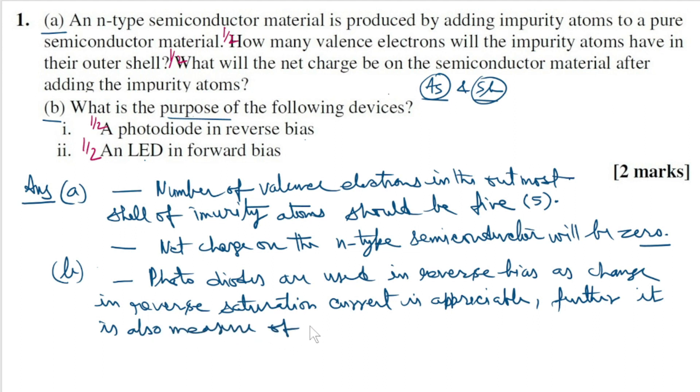current is also a measure of intensity of incident radiation. Now the second subpart: the purpose of LED in forward bias. When LED is used in forward bias, large current flows due to diffusion of electrons and it results in the production of monochromatic radiation.